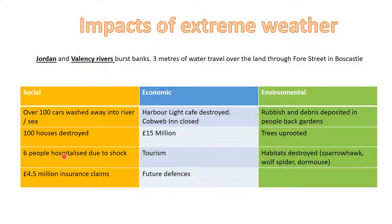£15 million is the total amount of all damage added up — to roads, buildings, cars, and so on. From an economic point of view, money has to be spent rebuilding Boscastle, which means less money goes into schools and hospitals in the local area. That creates a further negative impact in the future that can be added to this one.